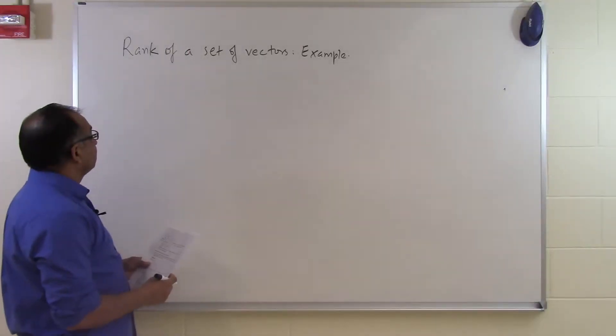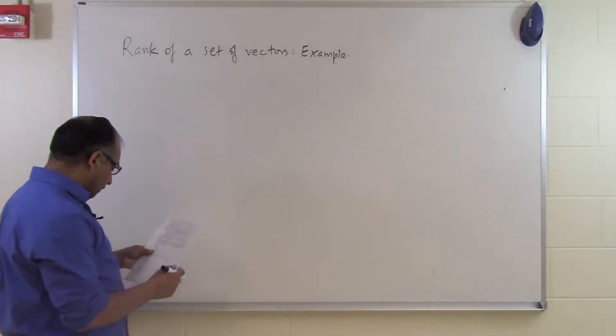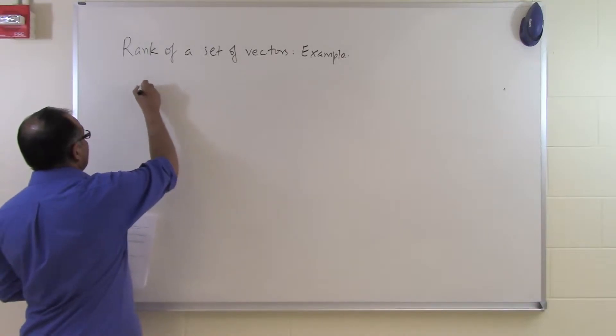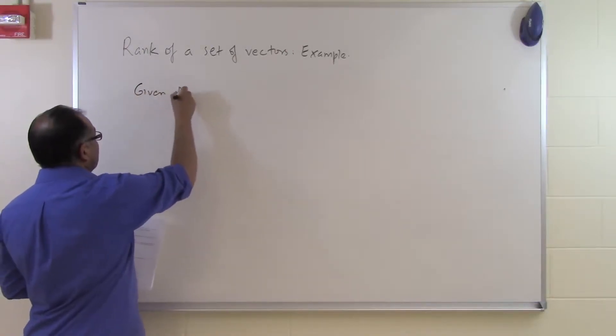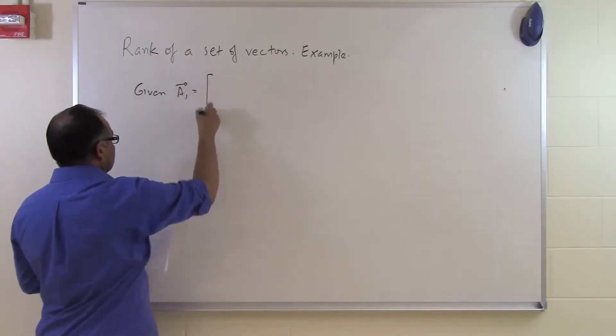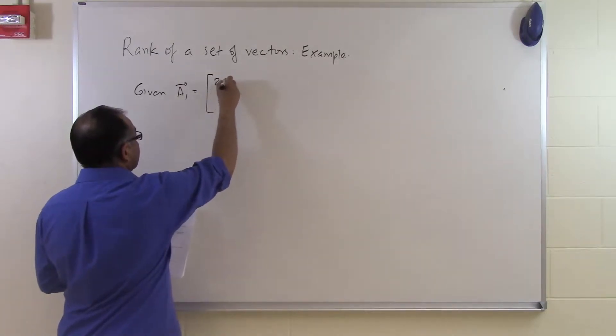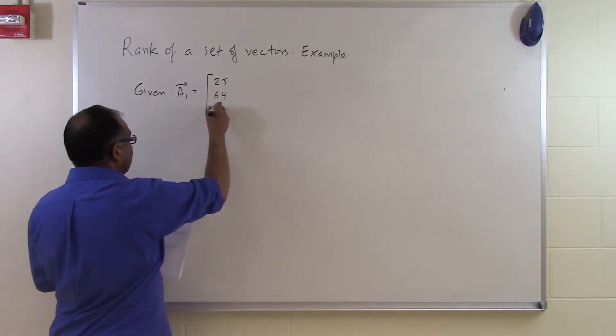In this example we'll look at what the rank of a set of vectors is. So let's suppose somebody says given A1 vector equal to 25, 64, 89.